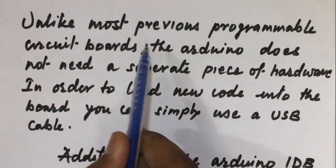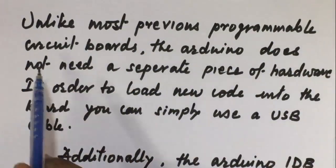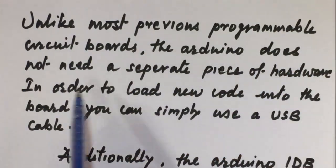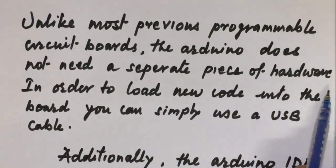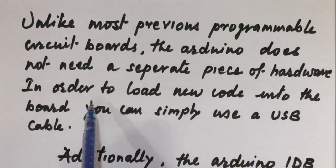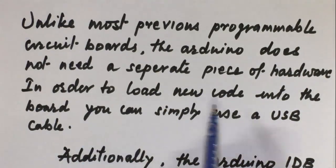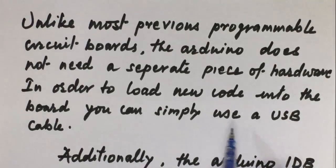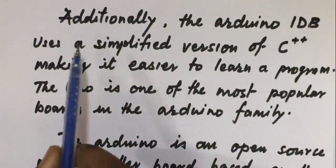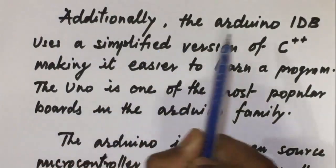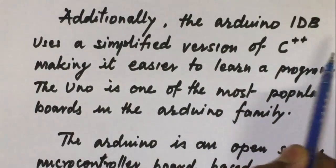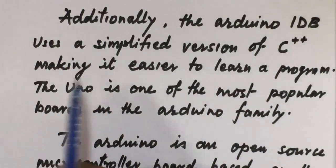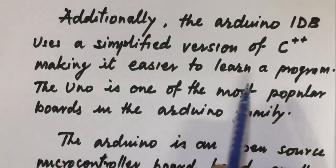Unlike most previous programmable circuit boards, the Arduino does not need a separate piece of hardware in order to load new code into the board — you can simply use a USB cable. Additionally, the Arduino IDE uses a simplified version of C++, making it easier to learn and program.